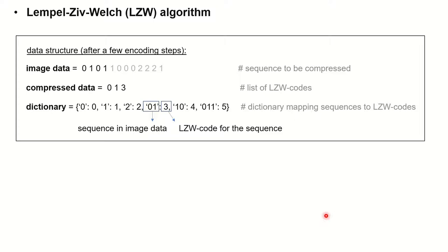Before we talk about the algorithm, we need a data structure — essentially three variables. The first variable is our image data, the sequence of numbers we want to compress. The second variable is the compressed version of the data, where each number is essentially a code that represents a sequence in the image data. And the third variable is a dictionary — a lookup table, which is a mapping from a sequence of numbers in the image data to a code, an LZW code that represents the sequence.